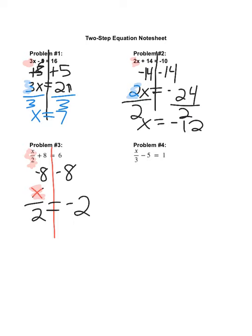You are now dividing by 2. So what is the opposite of dividing? Multiplying. So I'm going to multiply both sides by 2. Negative 2 divided by 2, or times 2. Dividing by 2 and multiplying by 2 makes 1. So I'm just left with x. Negative 2 times 2 is negative 4. So my final answer, x equals negative 4.